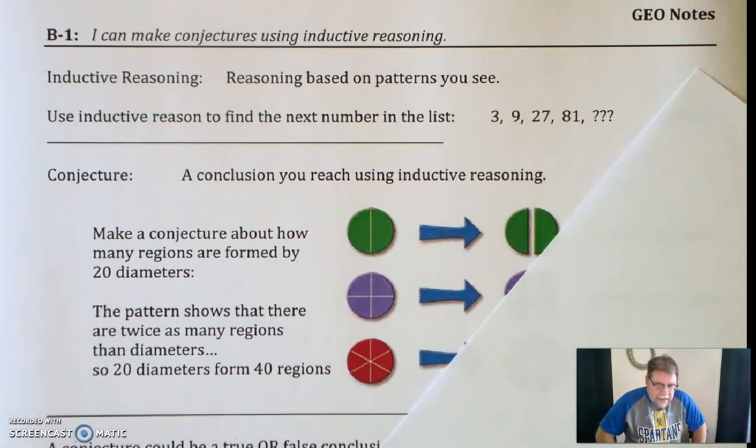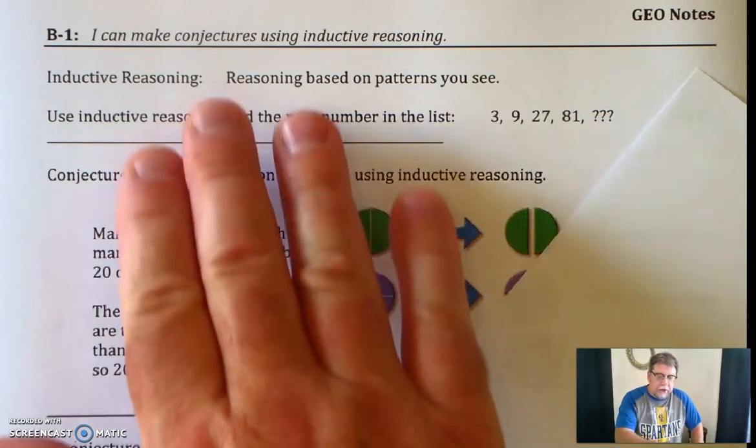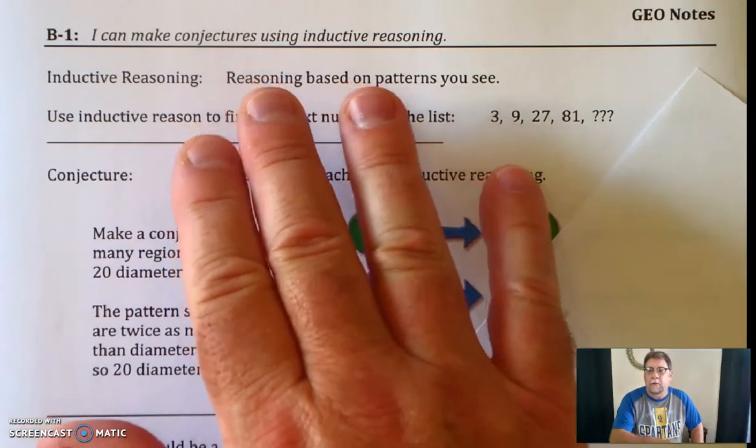Well, here we are. It is Unit B. We are going to start a brand new unit in our geometry class today. We're going to look at conjectures and we're going to look at inductive reasoning.